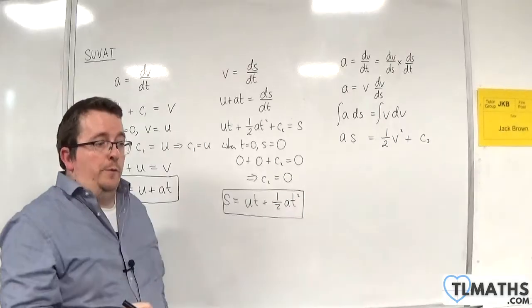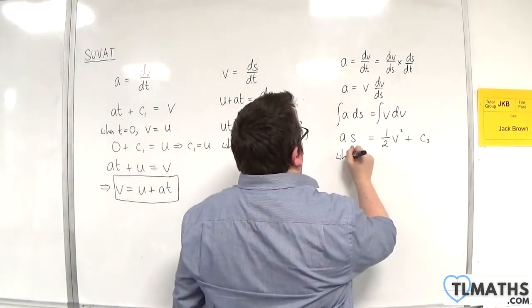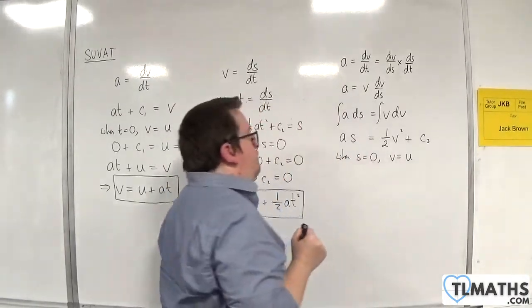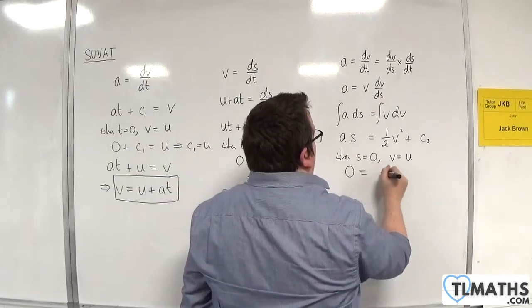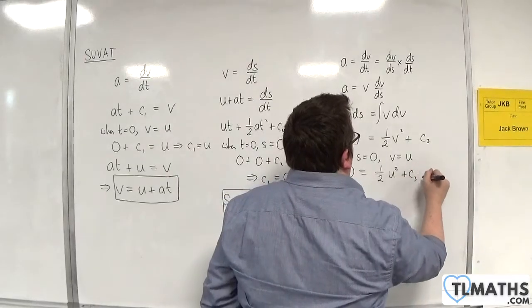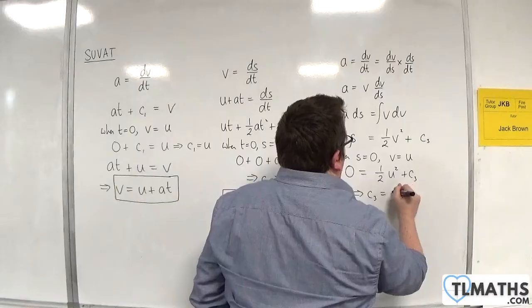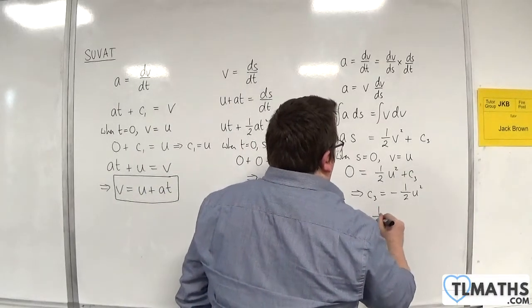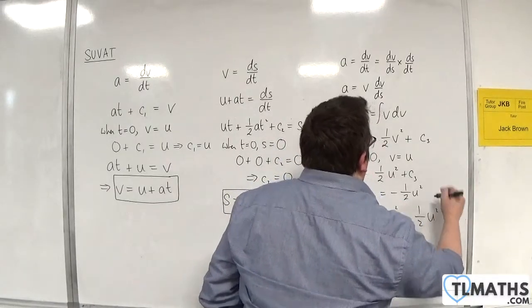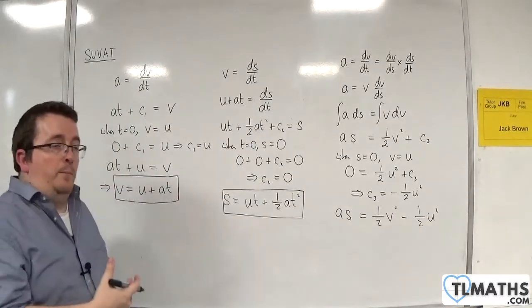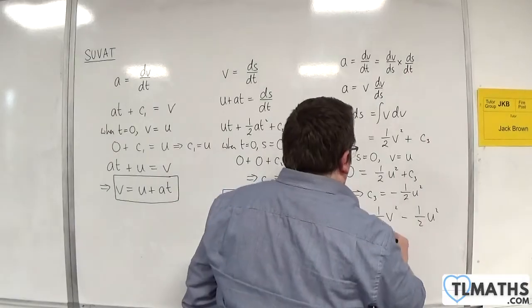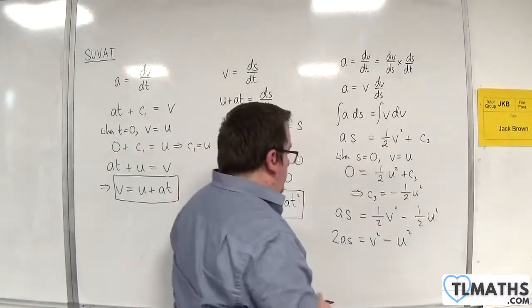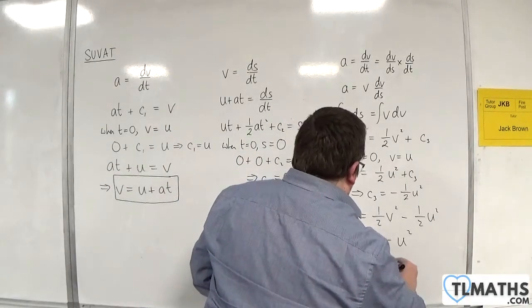What do we know? When s = 0, the velocity is the initial velocity u. So the left-hand side will be 0, and we'll have ½u² + c3, which means c3 must be −½u². So we've got as = ½v² − ½u². We can multiply both sides by 2: 2as = v² − u². Then rearranging to the form we all know: v² = u² + 2as.